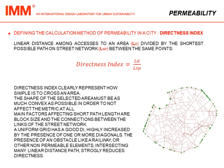Another value is the directness index, obtained by dividing the linear distance between accesses to an area by the shortest possible path on the street network between the same points. Directness clearly represents how simple it is to cross an area. The shape of the selected area must be as convex as possible in order not to affect the metric. The main factors affecting shortest path length are block size and the connectivity between links of the street network.